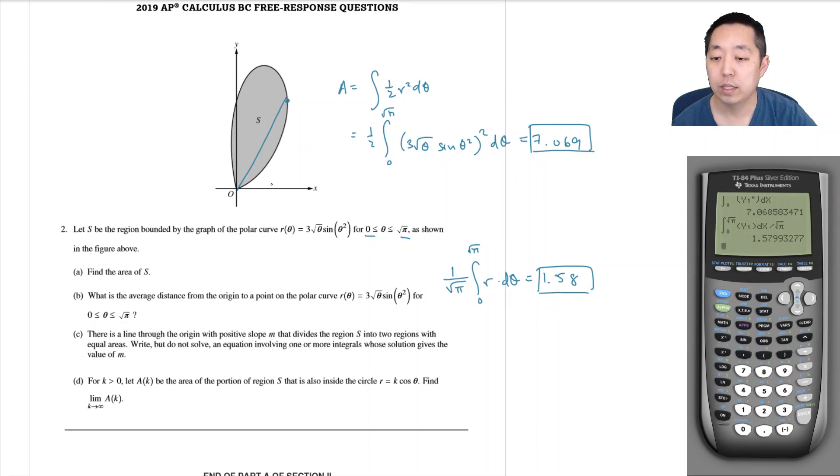Part C: there's a line through the origin with positive slope m that divides the region S into two regions with equal areas. Write but do not solve an equation involving one or more integrals whose solution gives the value of m. So if I were to cut it in half, in polar coordinates a line that goes through the origin is just theta equals m. That's the equation of a line in polar coordinates. It goes through the origin, so it's just this angle. What's true about this line is that all the points along this line have the same angle. The angle is equal to m. Let me see, y over x. No, theta is equal not m, tangent of theta is equal to m.